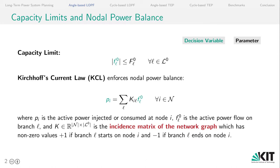So let's get started with the common angle-based formulation. First of all, we have capacity limits on the flow variables f_l, which are bounded by their capacities in both directions. The superscript 0 denotes existing lines and we will later introduce the subscript 1 for candidate lines in the setting of transmission expansion planning. We also have Kirchhoff's current law, which enforces a nodal power balance.